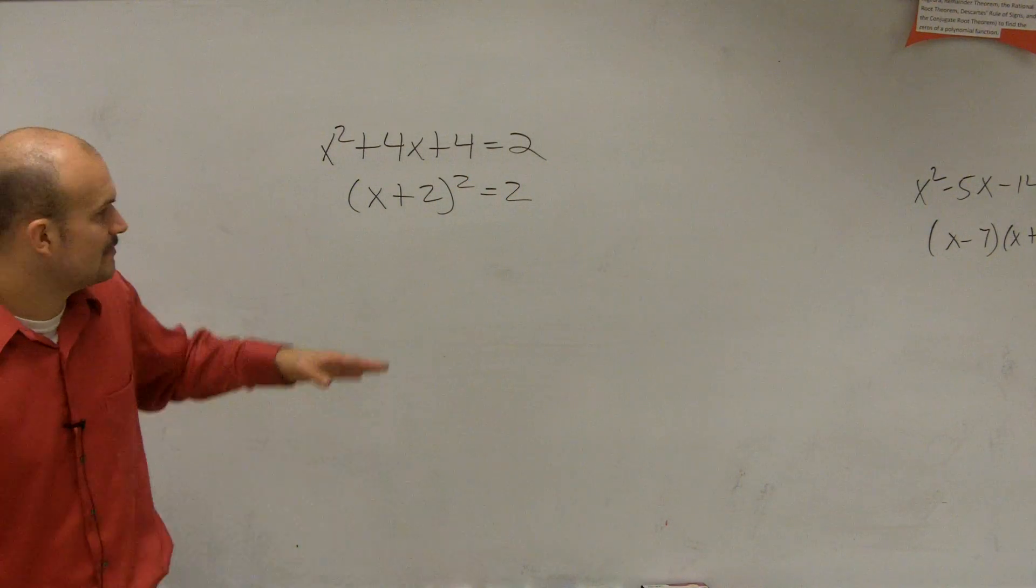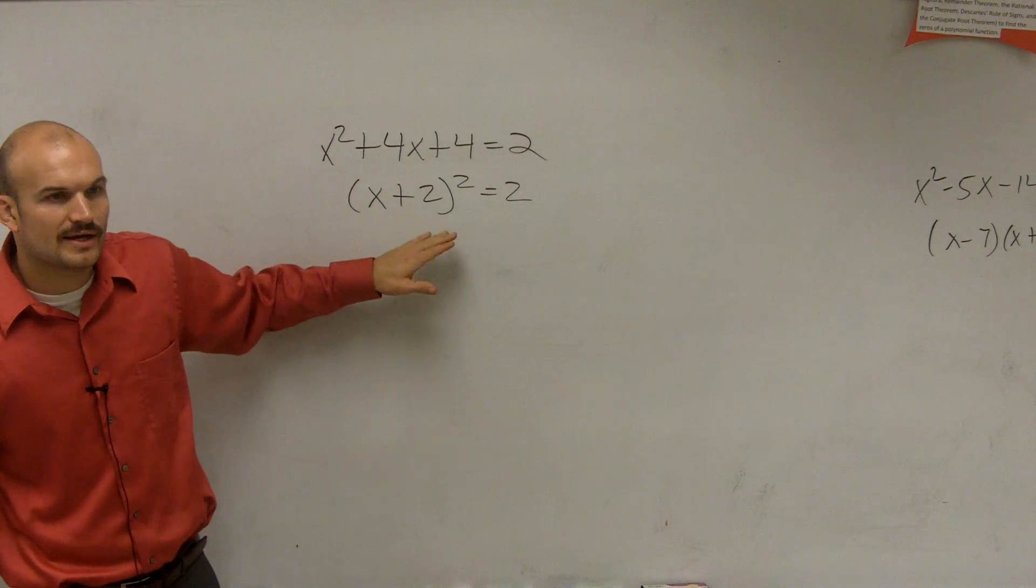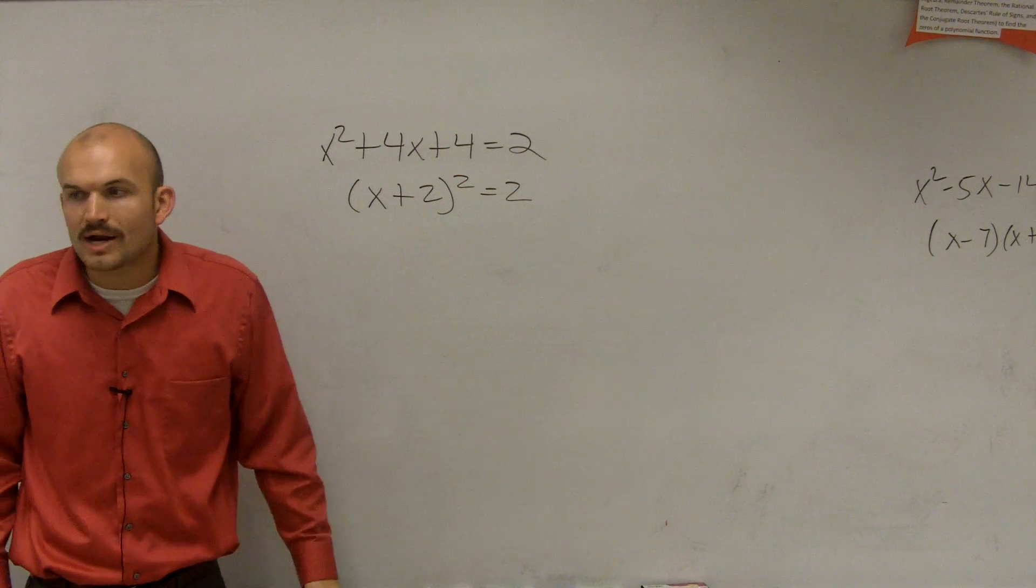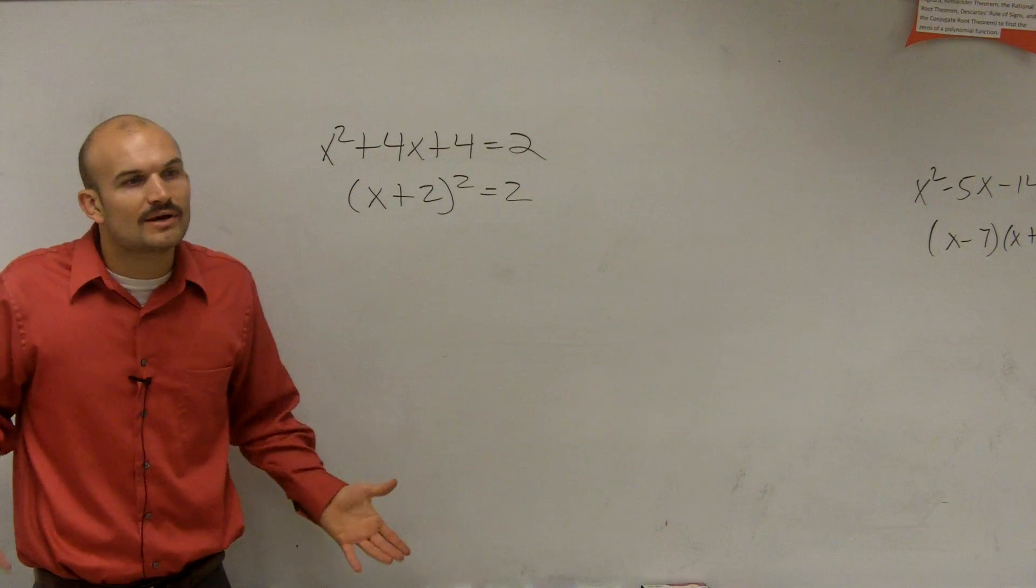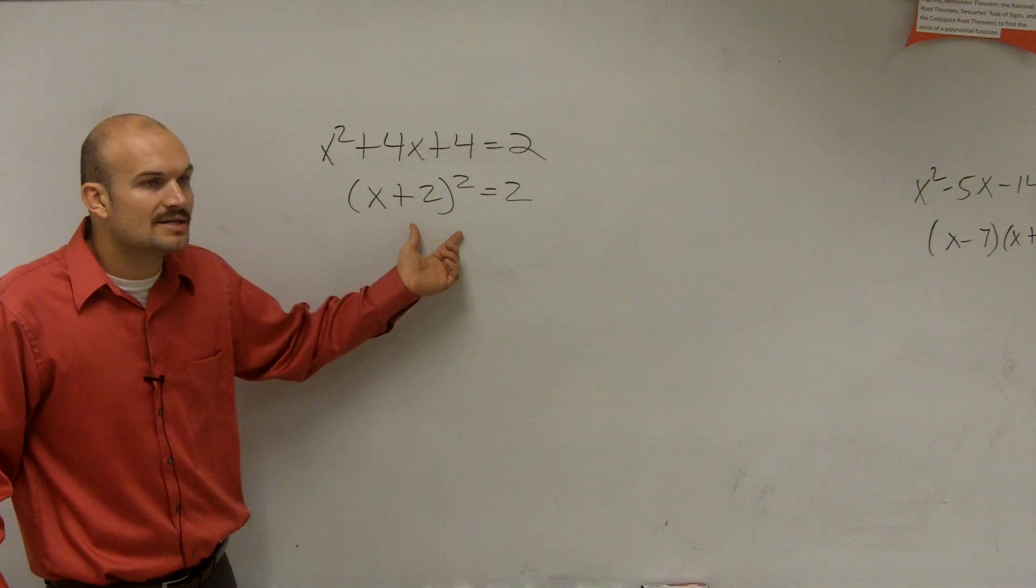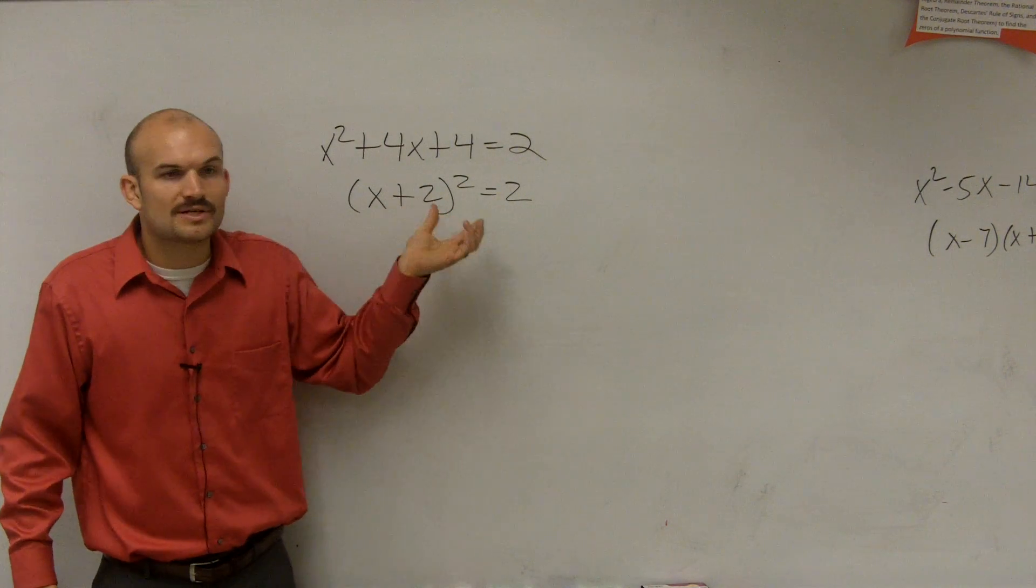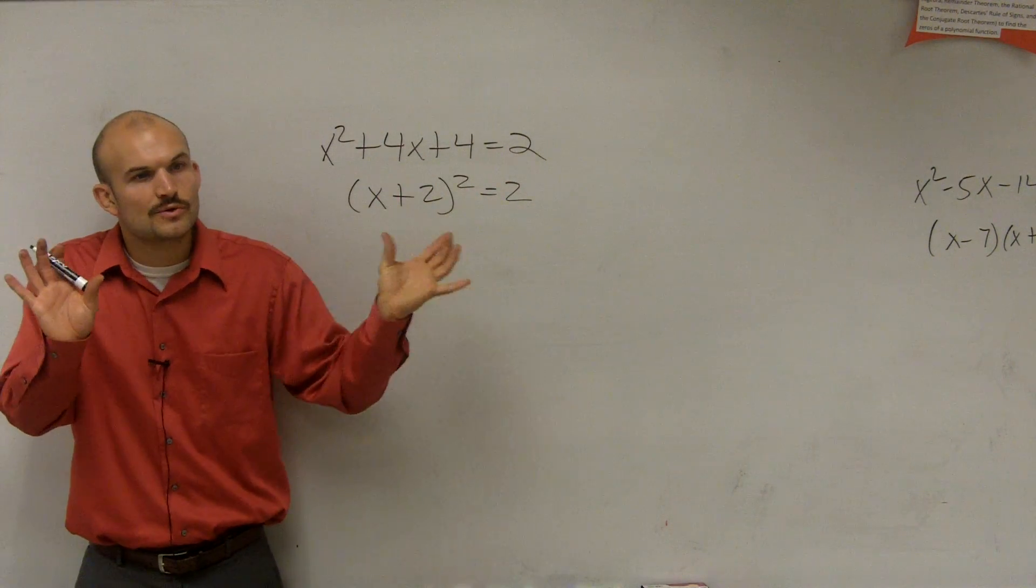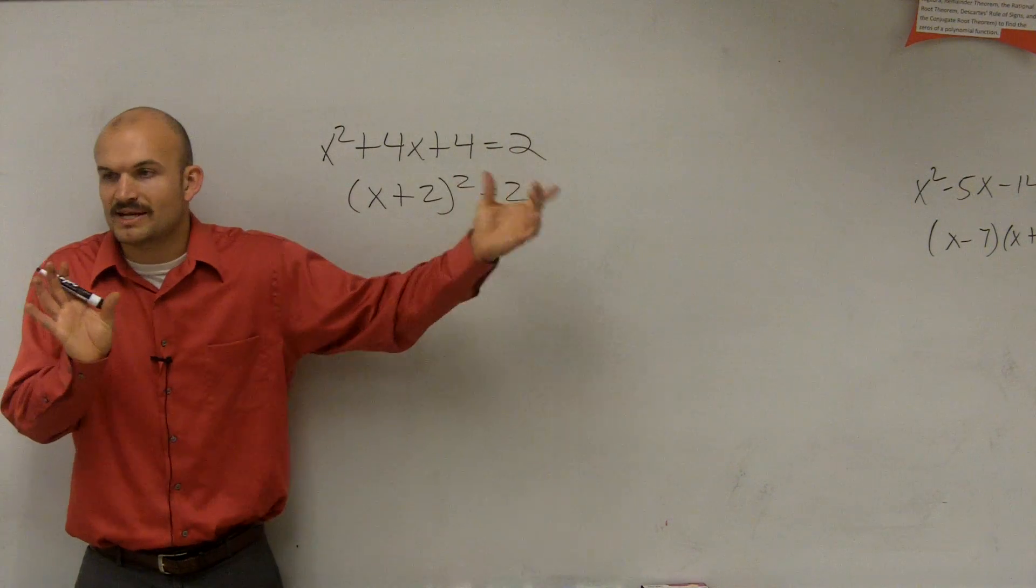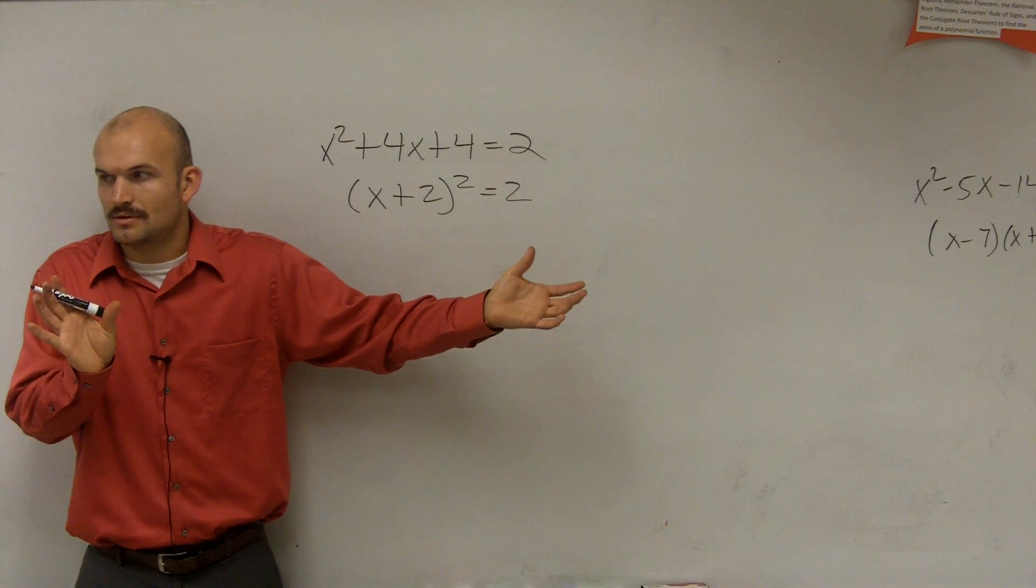And the reason why this is so important, because by going from here to here, we don't have to use the zero product property anymore. Why is it we don't have to use the zero product property? Because I can rewrite this as x plus 2 squared, rather than two different numbers, multiplying to give you 0. All right?